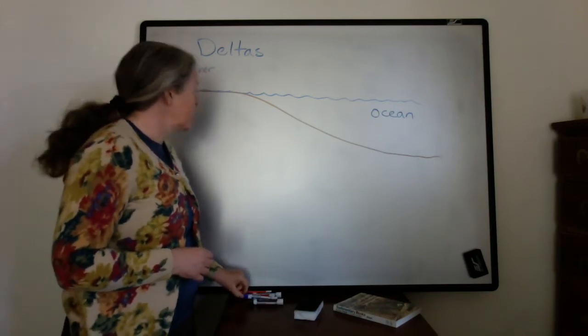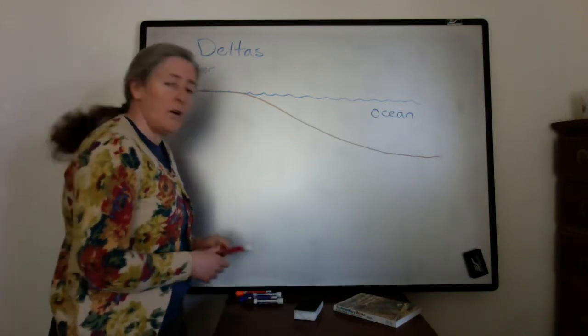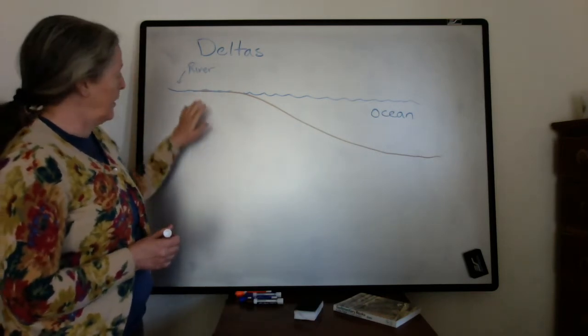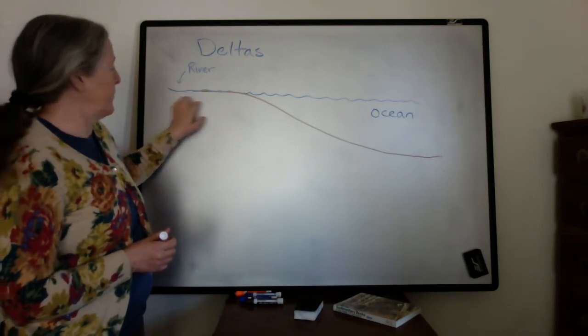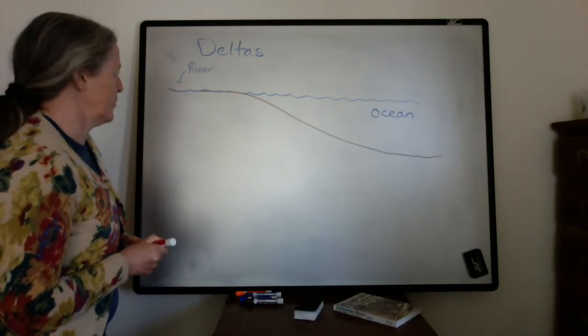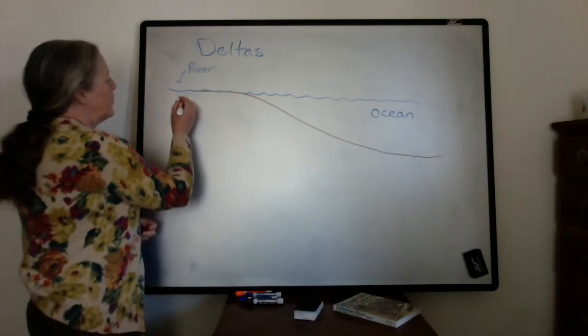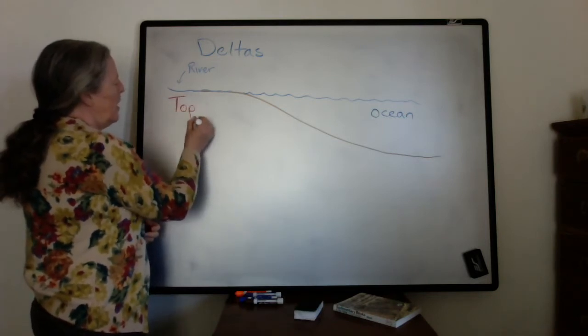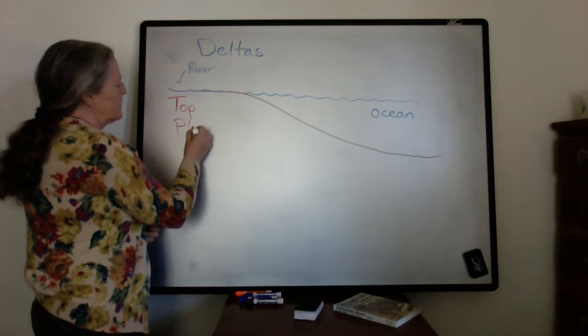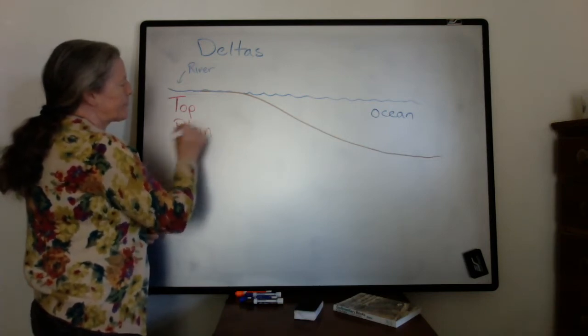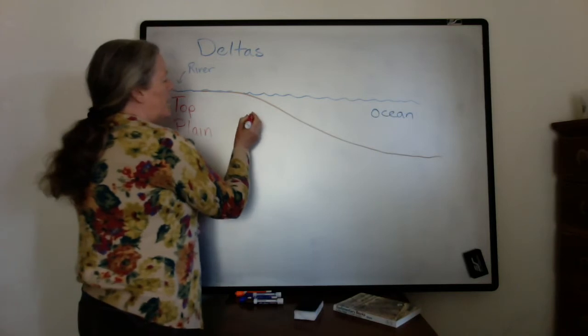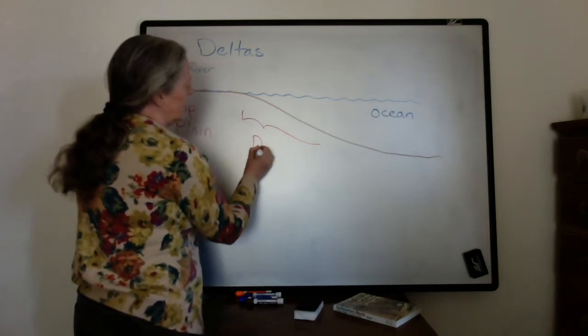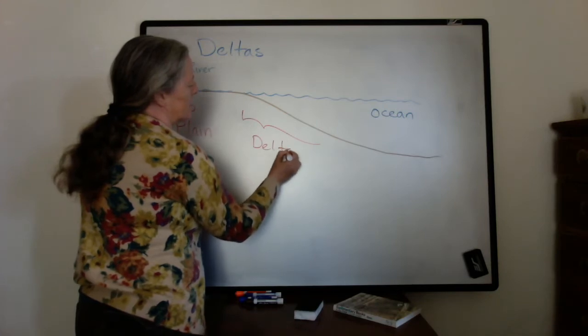The depositional environments on a delta vary depending on their location relative to the river and the ocean water. We have here a delta top, often called a delta plane, and then this zone in here is the delta slope.